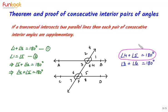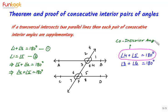Angles 4 and 5 are also called co-interior angles. So these angles are also termed as co-interior angles.